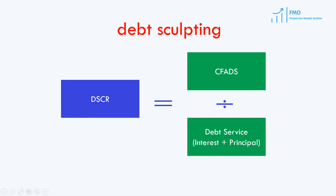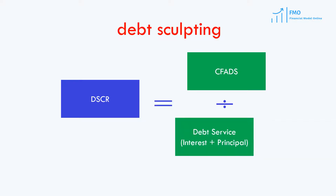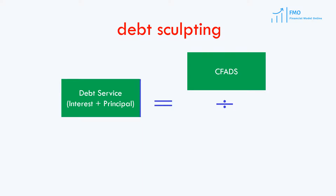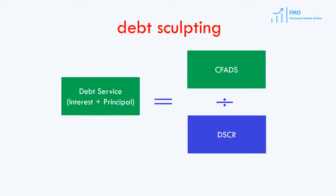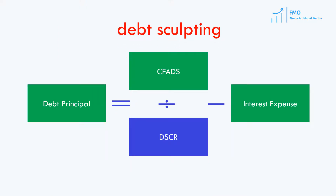How do we do the debt sculpting in project finance modeling? Let's start with the DSCR definition, which is a ratio of CFADs to debt service. What we want to do when we are tailoring debt service to CFADs is to maintain the same DSCR in all periods when we have to pay debt principal and interest. We achieve this by rearranging this DSCR formula: divide CFADs by the DSCR to get the debt service, which is the sum of debt principal and interest payments. We can further rearrange this formula to get the debt principal repayments, which is CFADs divided by the DSCR minus the interest expense.